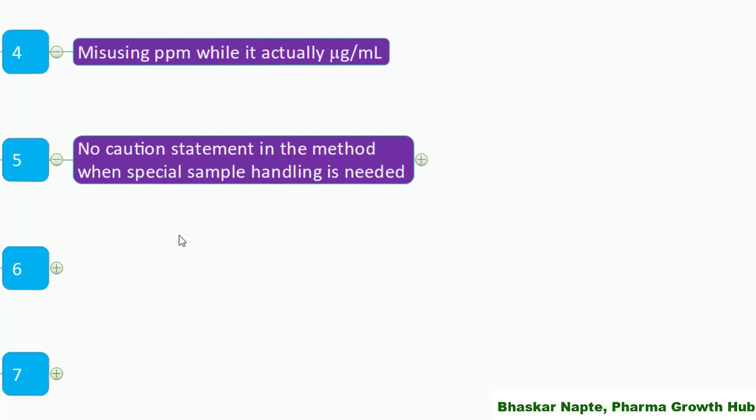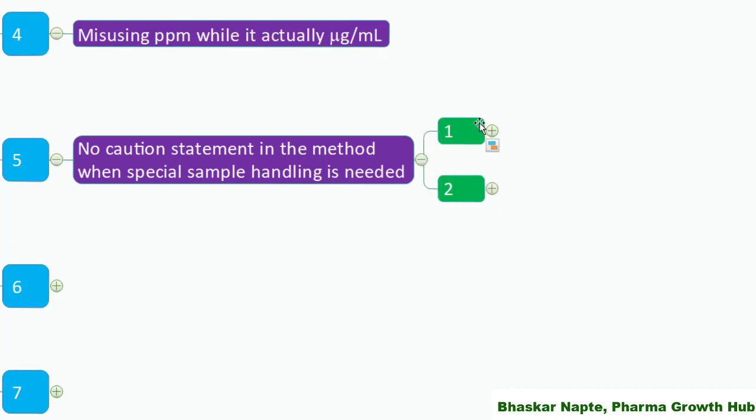No caution statement in the method when special sample handling is needed. Not all sample solutions are equally stable, and chromatographic systems are not robust across all parameter studies. There may be situations where standard or sample solutions are not stable beyond a certain time period, or a drug substance is highly hygroscopic and utmost precaution is needed during weighing — for example, maintaining humidity not more than 60% RH. Those details are very crucial and must be mentioned in the analytical test procedure.